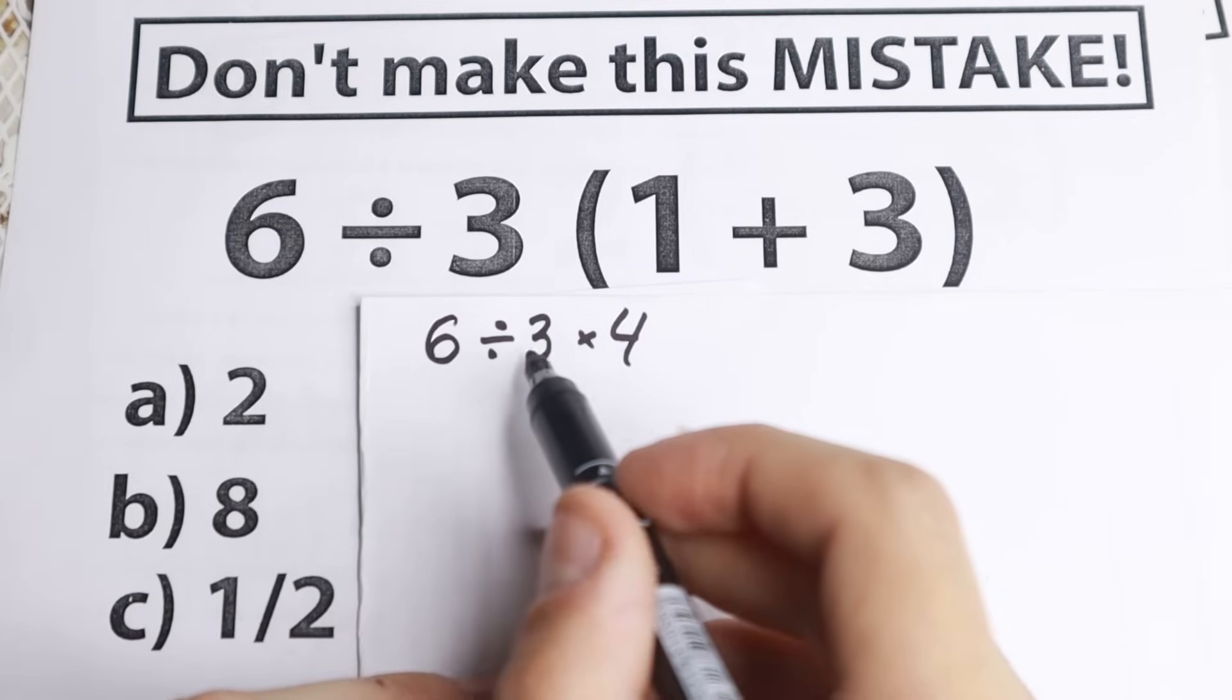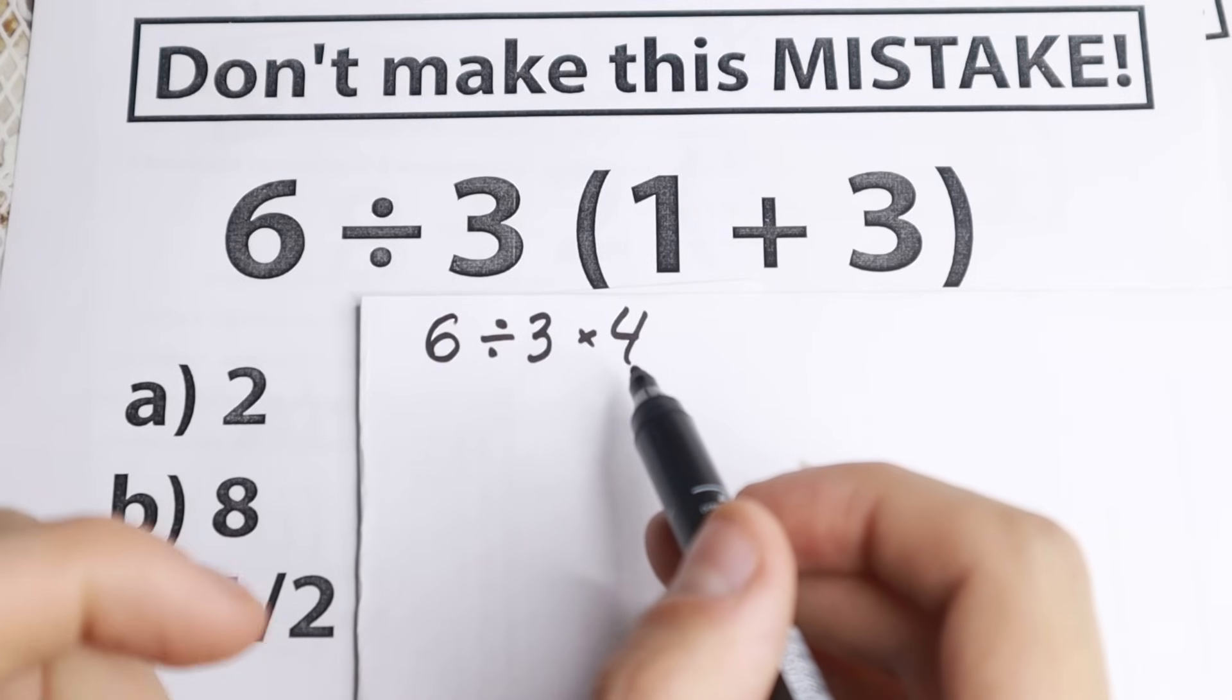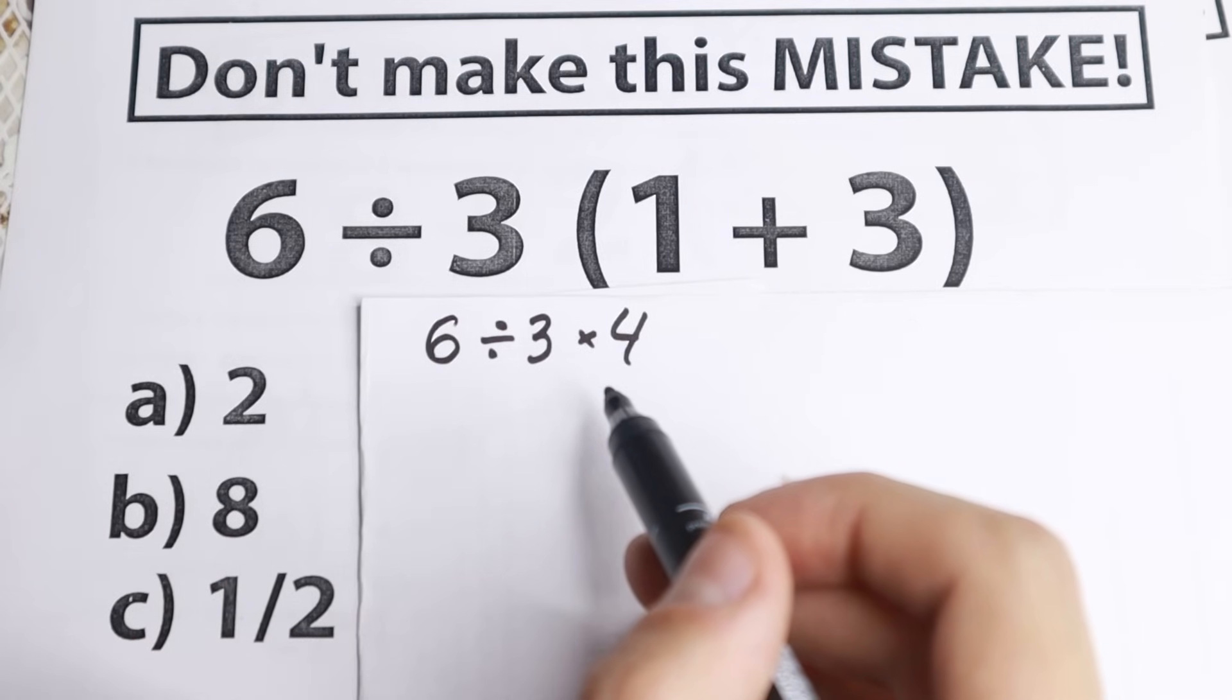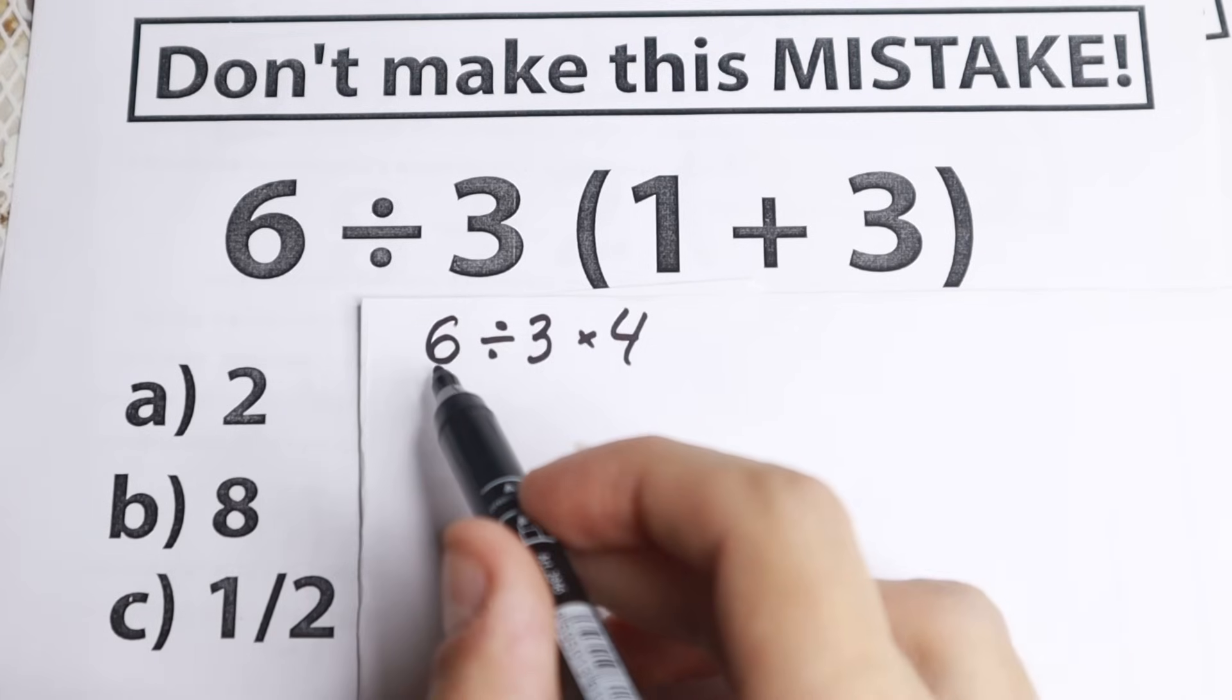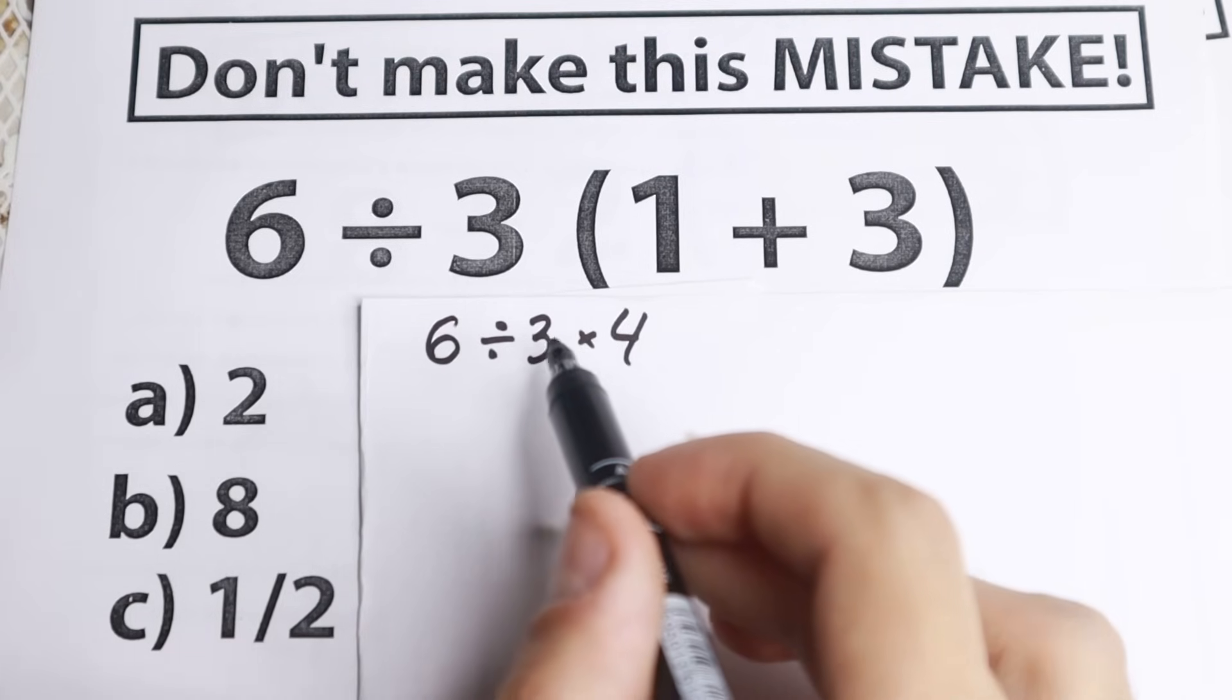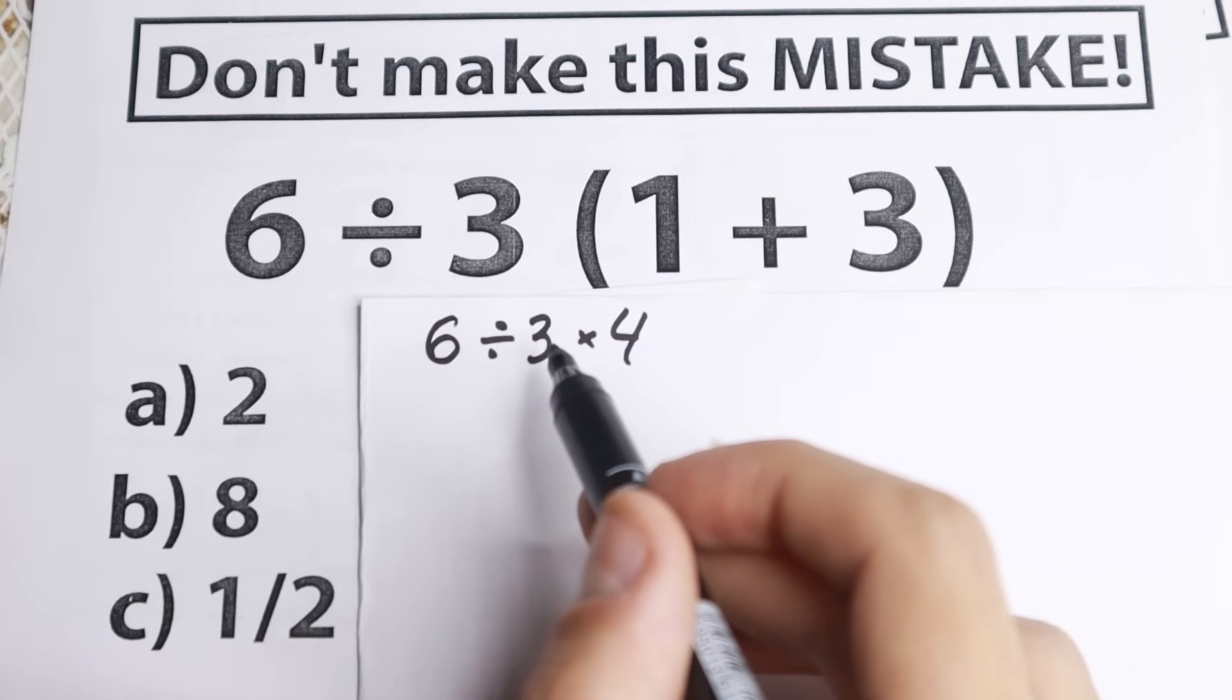If you type this expression into a calculator, the input has to be parsed and then computed. Most calculators will convert the parentheses into an implied multiplication. According to the order of operations, division and multiplication have the same precedence, so the correct order is to evaluate from left to right.